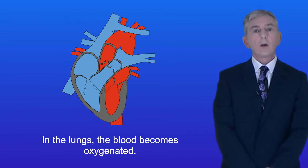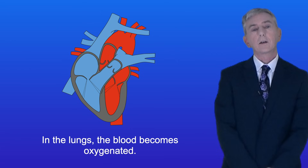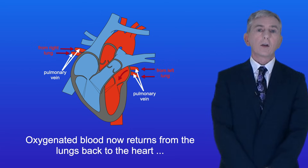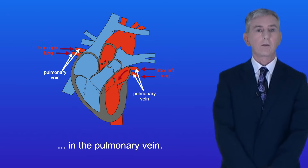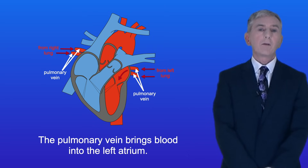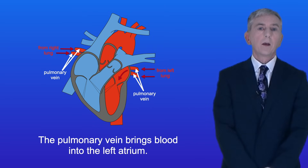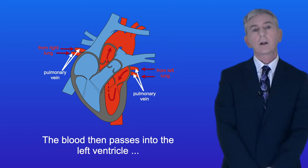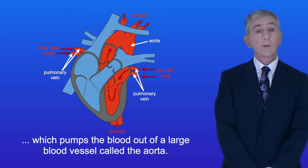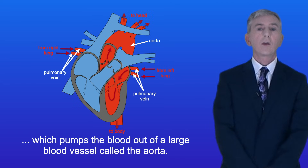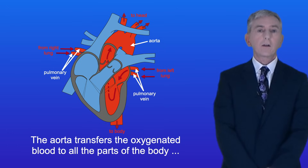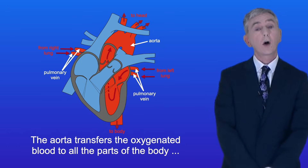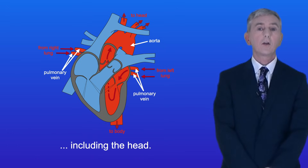In the lungs the blood becomes oxygenated. Oxygenated blood now returns from the lungs back to the heart in the pulmonary vein, which brings blood into the left atrium. The blood then passes into the left ventricle which pumps the blood out through a large blood vessel called the aorta, which transfers the oxygenated blood to all parts of the body including the head.